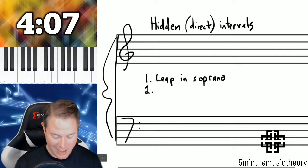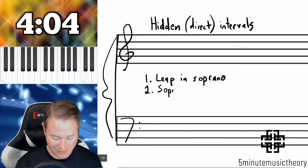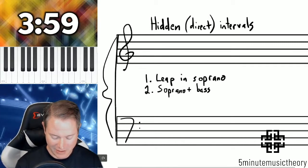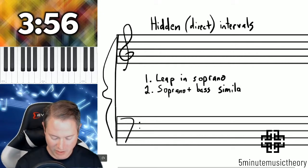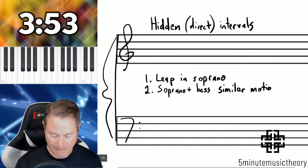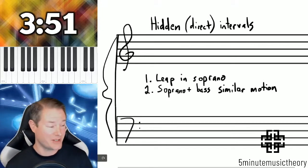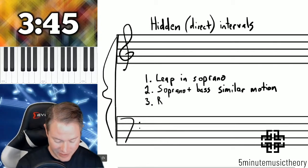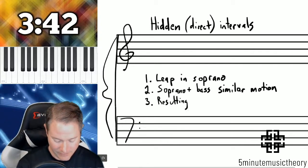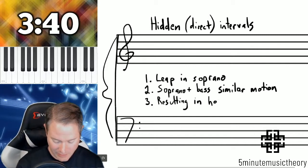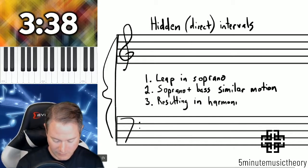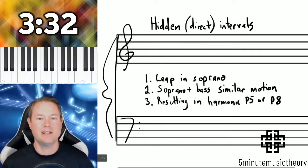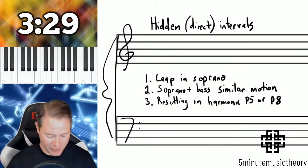If there's a leap in the soprano and the soprano and bass are moving in similar motion — not parallel, but similar motion — then that's two out of three criteria met to create hidden intervals. And then the last is that the resulting harmonic interval is a perfect fifth or perfect octave. For hidden intervals to occur, all three of these criteria must be met.